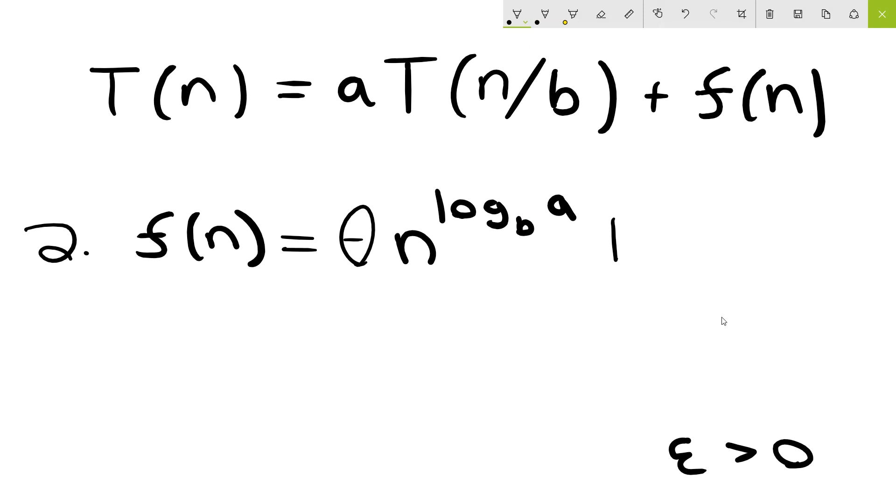And that's that there can be a log k of n factor in addition on this f of n term. So case number two happens whenever f of n is tightly bounded, so theta bounded, by n log base b of a times a factor of log to the kth power of n.